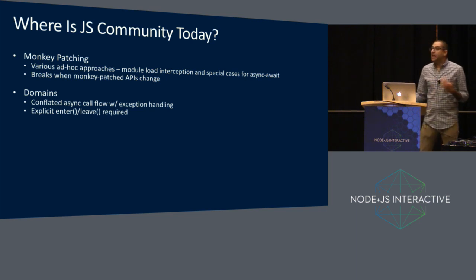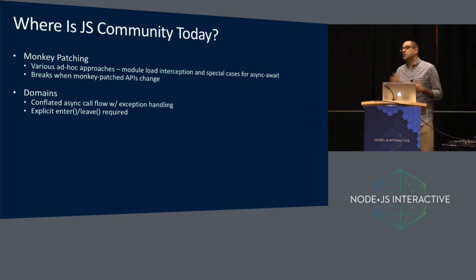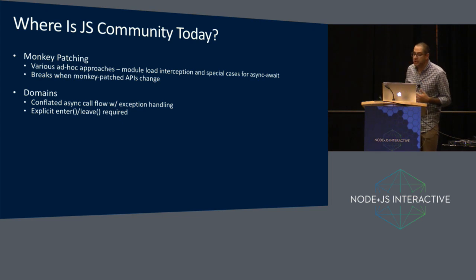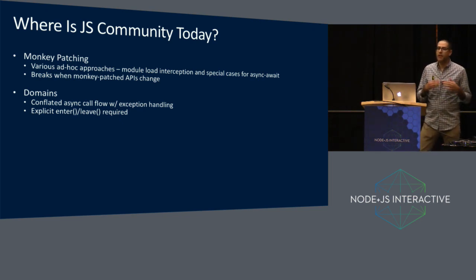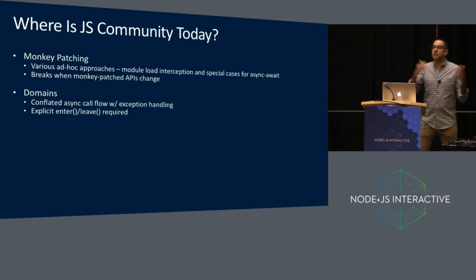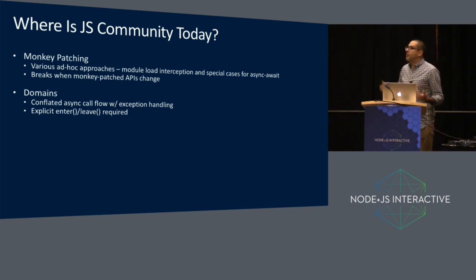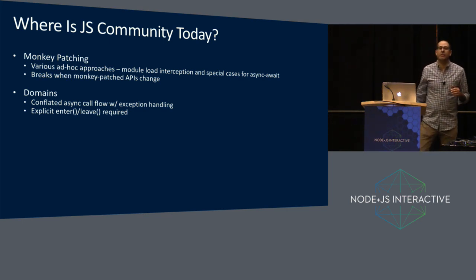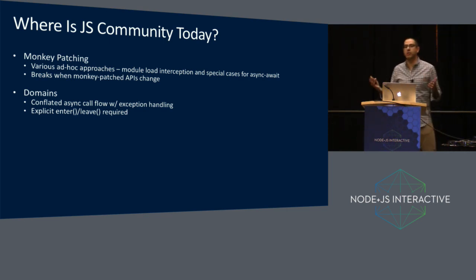Domains is a deprecated API inside of Node that tried to solve this problem. There's a postmortem online so you can read about the various drawbacks and why it was deprecated. One is it conflated the notion of asynchronous structure with asynchronous exception handling, and that was problematic. The other problem is that it required explicit enter-leave semantics — if you had a code path that didn't correctly leave the domain, you were broken.